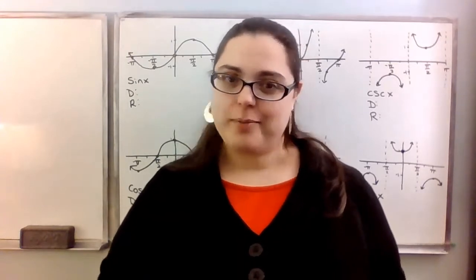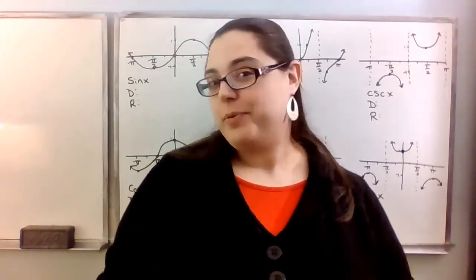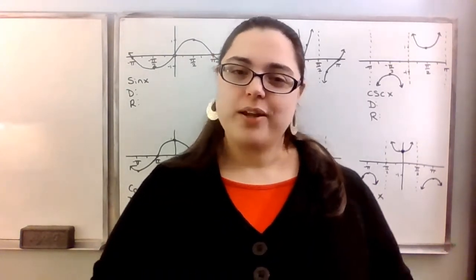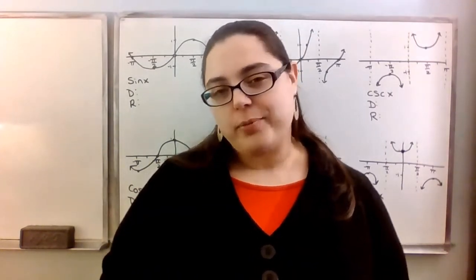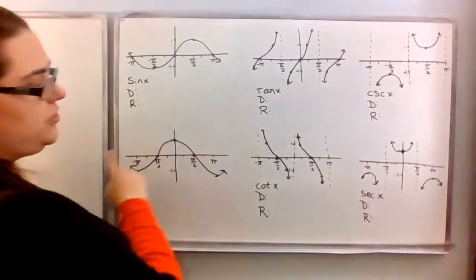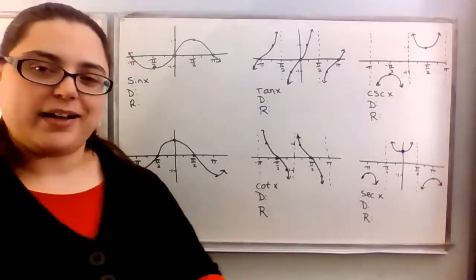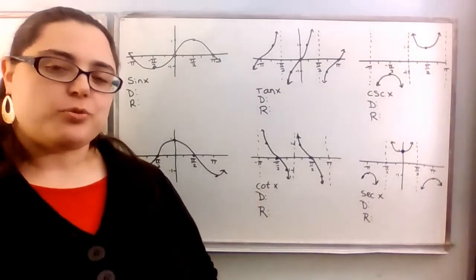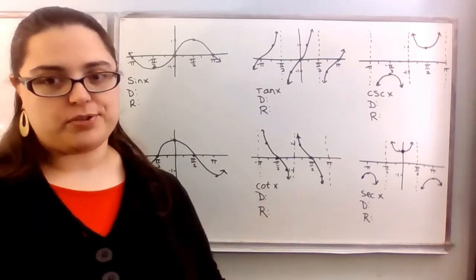One of the things that's challenging about trigonometric functions when it comes to finding an inverse is that they're periodic, which means they are definitely not one-to-one. So in order to find an inverse of a function, you need it to be one-to-one. There's a problem with all of our trig functions, because all of them are going to fail the horizontal line test. So what we need to do is restrict the domain of the trig function if we're going to be able to invert it.